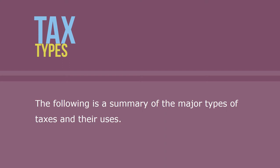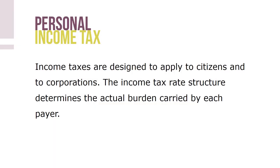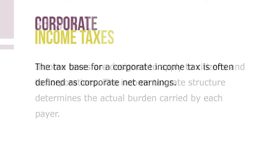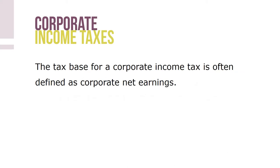The following is a summary of the major types of taxes and their uses. Income taxes are designed to apply to citizens and to corporations. For citizens, the income tax base includes salary and wages. A series of adjustments, exemptions, and deductions refine the income tax burden to each citizen's situation. The income tax rate structure determines the actual burden carried by each payer. In many states, legislators have linked state tax rules on income adjustments, exemptions, and deductions with corresponding federal regulations. The tax base for a corporate income tax is often defined as corporate net earnings. Refinements include deductions for capital losses, depreciation of capital investments, and spending on research and development.